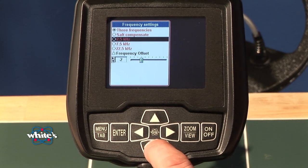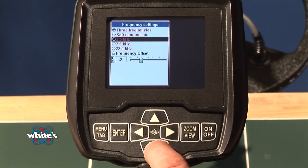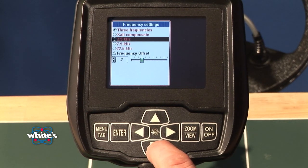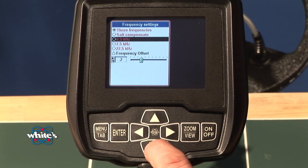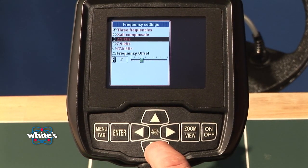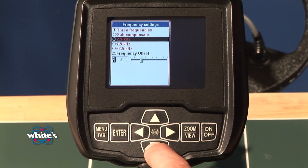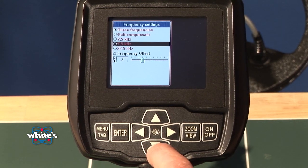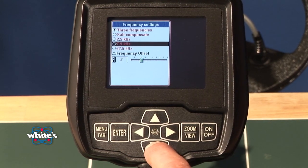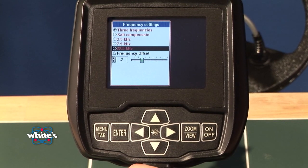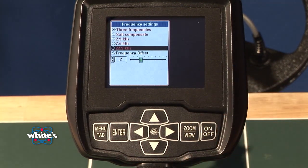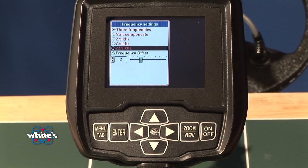Then we have our individual frequencies, and this is the low frequency, the 2.5, which is going to be stronger on your silver copper type metals, your higher conducting metals. These are picking one individual frequency over the multi-frequency selection. A 7.5, which is a good middle of the road frequency, and then 22.5, which is better for your golds and your nickels, your lower conducting type targets.